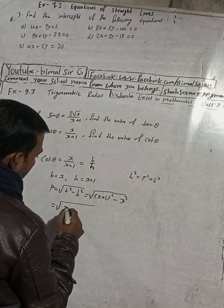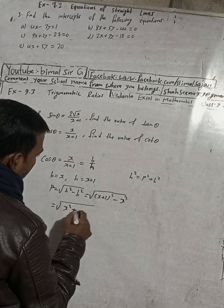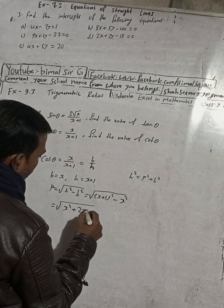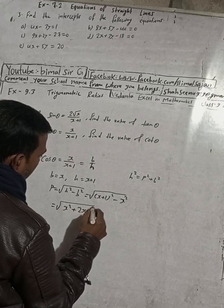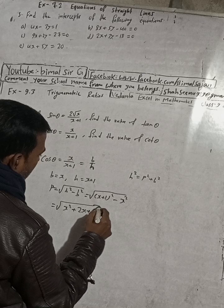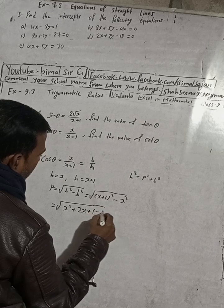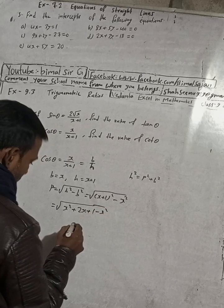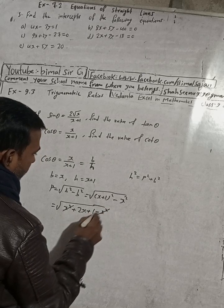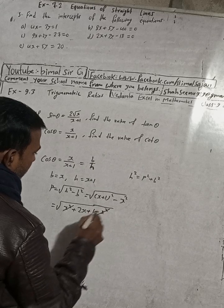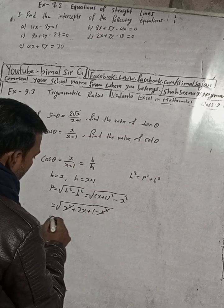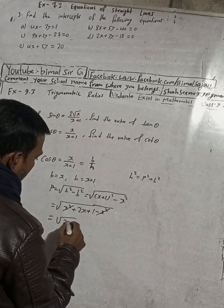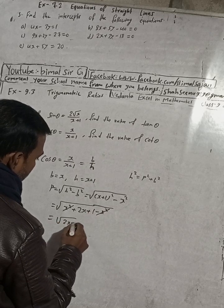When we solve this, we can write x squared plus 2x into 1, so 2x plus 1 squared is 1, and then minus x squared. We can cancel the x squared terms. The remaining is root under 2x plus 1.